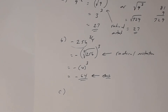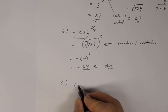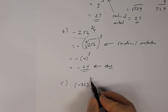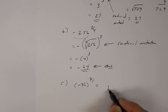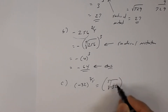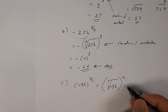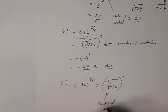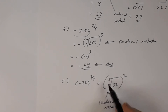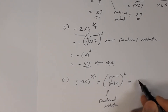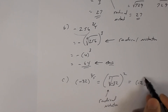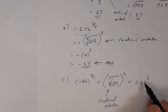Letter C: suppose we had negative 32 to the 2/5 power. Your index will be 5 and your exponent will be 2. So your radical notation is the fifth root of negative 32, all raised to the second power. The fifth root of negative 32 is negative 2. Negative 2 is being squared — notice the parentheses — so negative 2 times itself is a positive 4. The answer is positive 4.